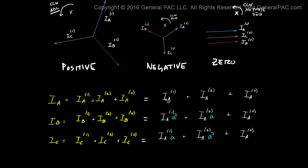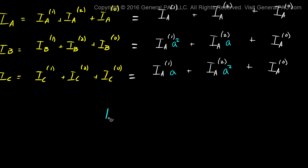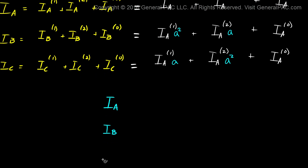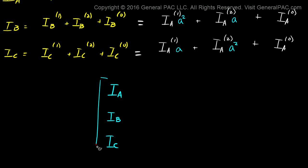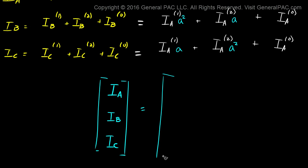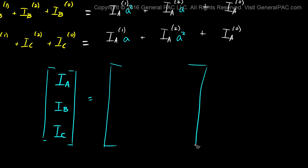In this tutorial, we're going to represent these phasors in matrix form to get a better understanding of what that might look like. First of all, we're going to represent Ia, Ib, and Ic. We're going to say that we simply have one column and three rows of this matrix, and that is equal to some column multiplied by some column.